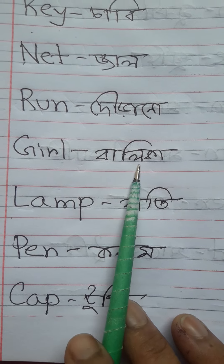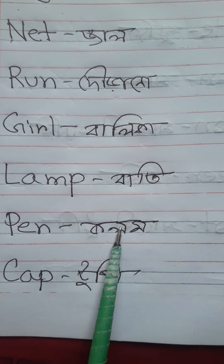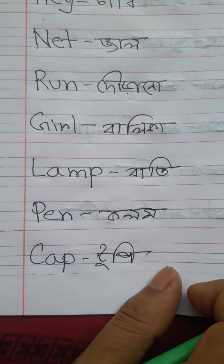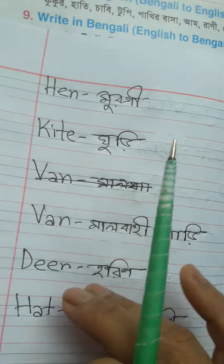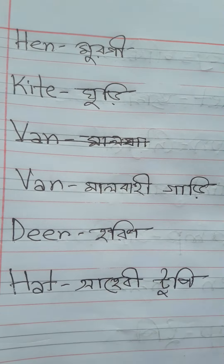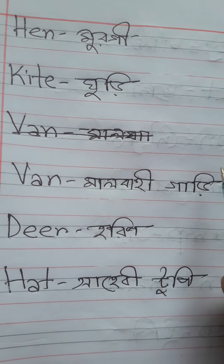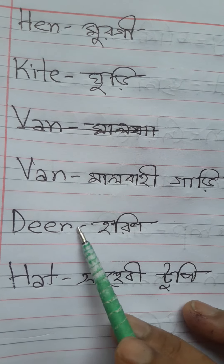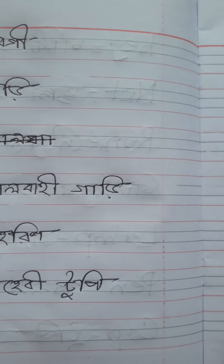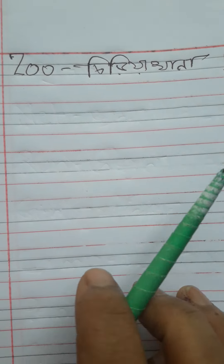Girl অর্থ বালিকা। Lamp অর্থ বাতি। Pen অর্থ কলম। Cap অর্থ টুপি। Hen অর্থ মুর্গী। Kite অর্থ ঘুড়ি। Van অর্থ মালবাহী গাড়ি। Deer অর্থ হরিণ। Hat অর্থ শায়বি টুপি। Zoo অর্থ চিড়িয়াখানা।